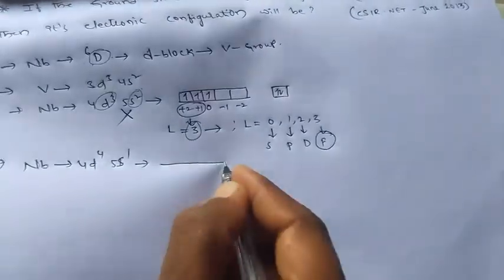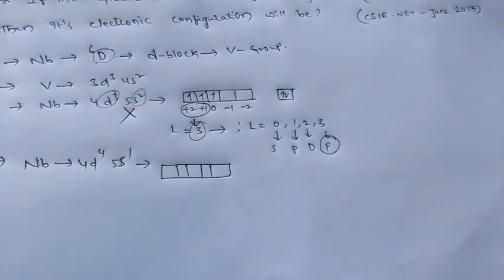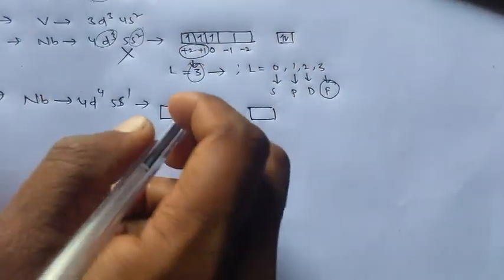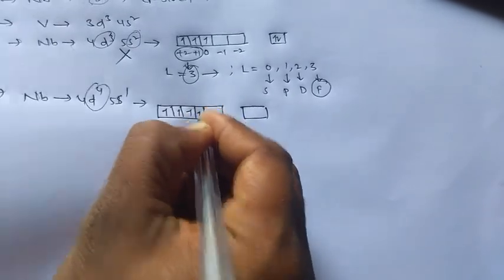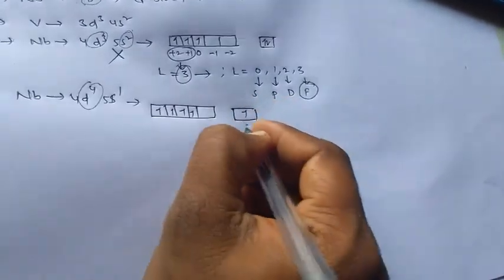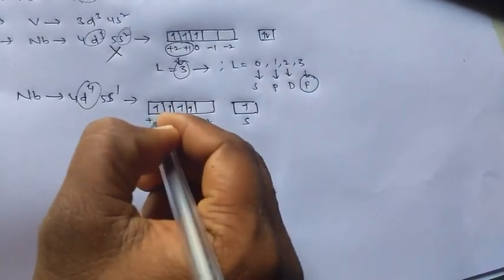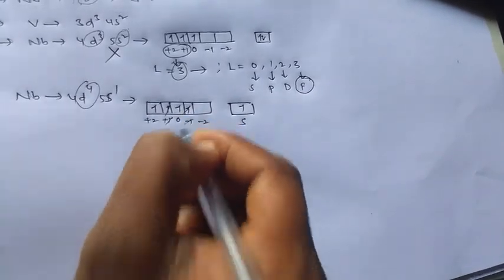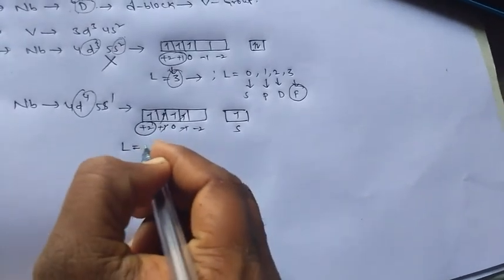For that I am giving 4D4 and 5S1. For this, if we observe, we have 4 unpaired electrons and 1 unpaired electron in S. I am giving ML values. From this, this plus 1, this minus 1 is cancelled. And we have only 2. So L is here, L is equal to 2.